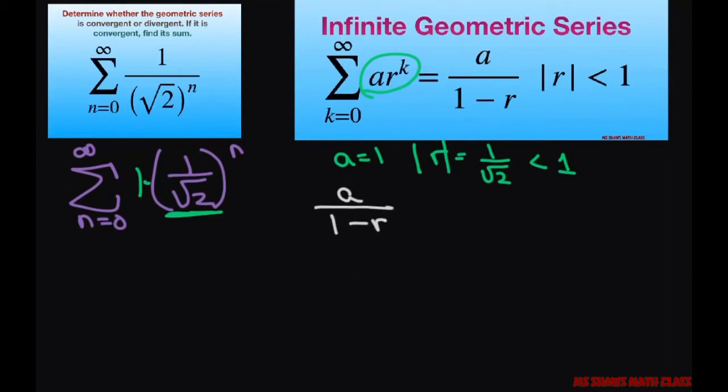So all we have to do is find the sum. We take our a, which is 1, divided by 1 minus 1 divided by square root of 2.